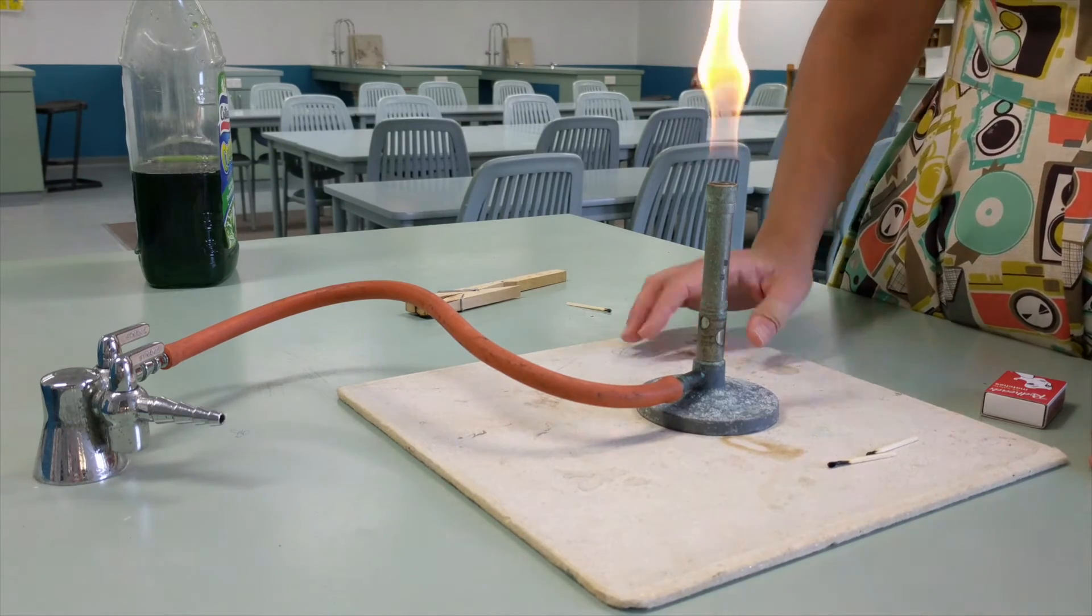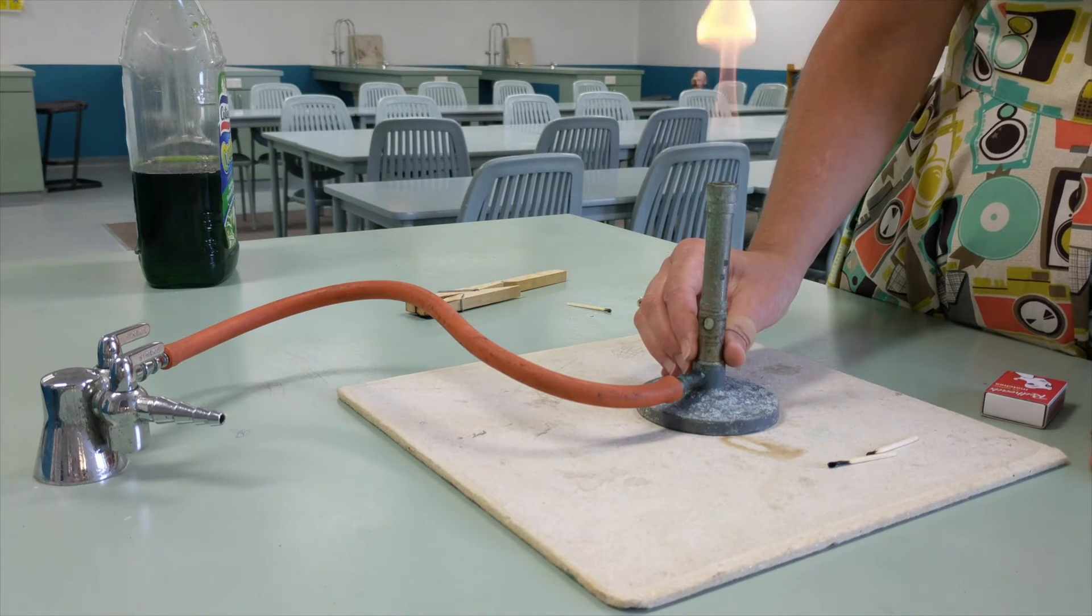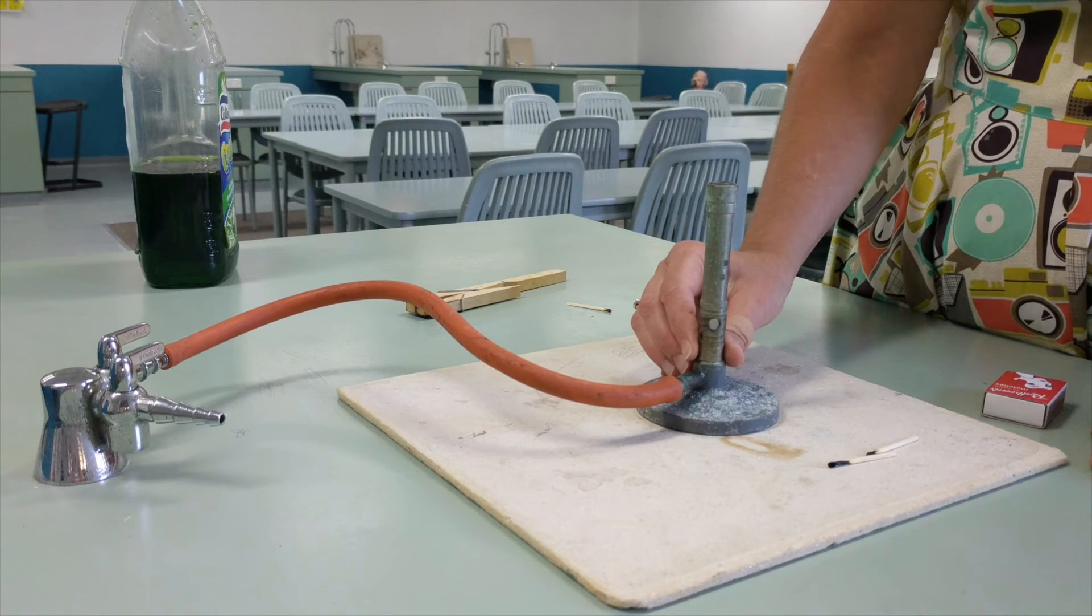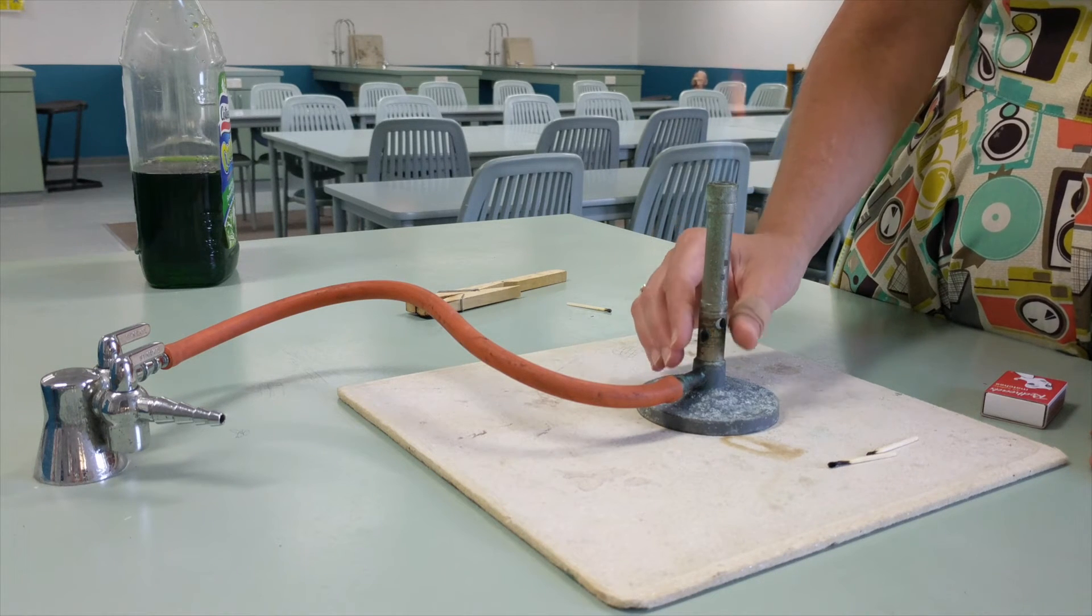When you're ready to heat, you slowly turn this part of the Bunsen. This is called the collar until the air hole is open. Don't be scared. None of this part of the Bunsen is hot.